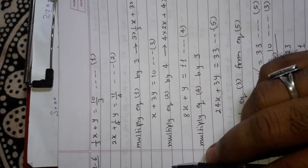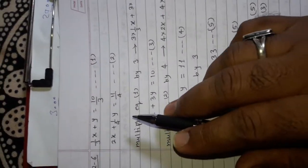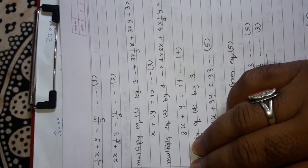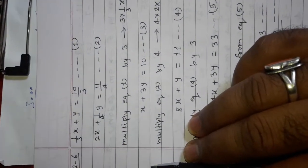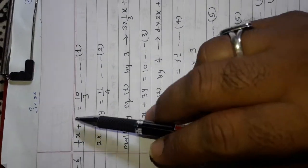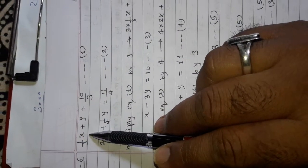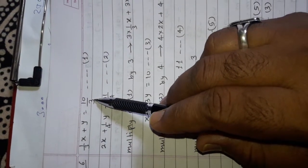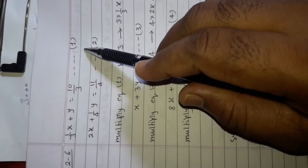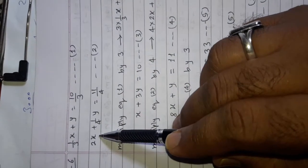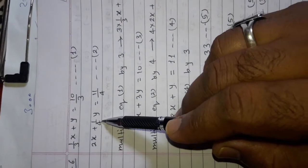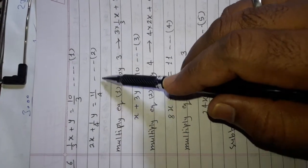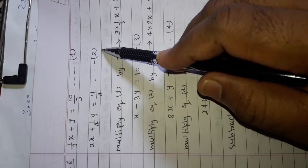Dear students, now we are going to start question 6 of question number 2. It is 1 upon 3x plus y is equal to 10 upon 3, equation number 1. And 2x plus 1 upon 4y is equal to 11 upon 4, equation number 2.